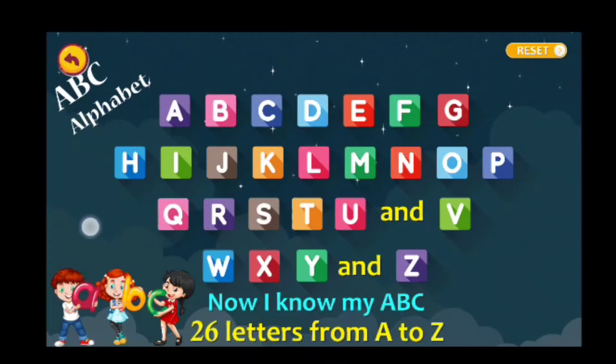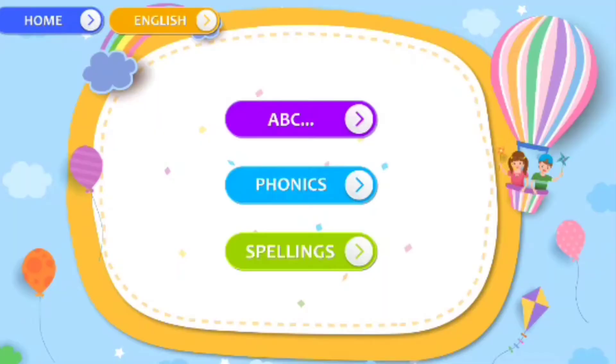Now I know my ABCs, 26 letters from A to Z. A, B, C, D, E, F, G.